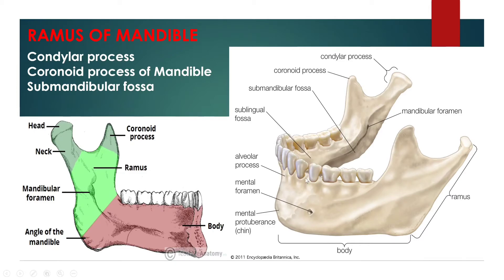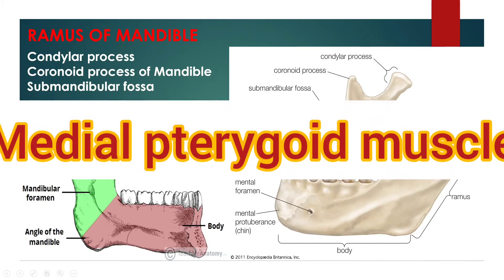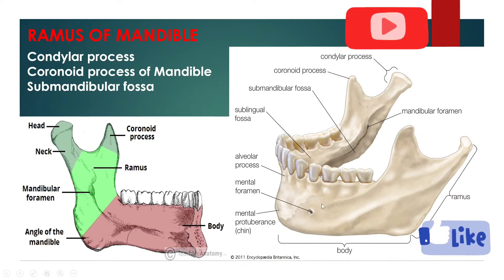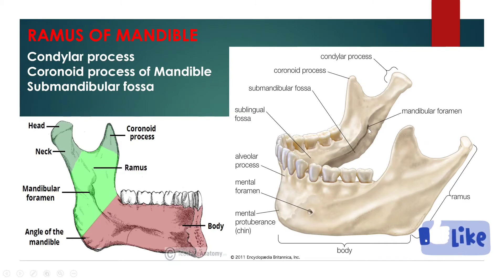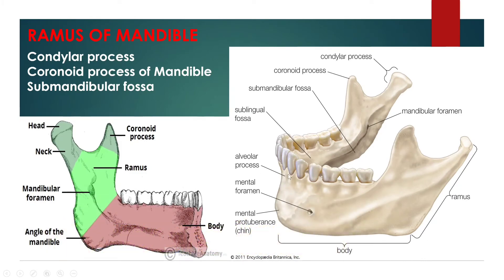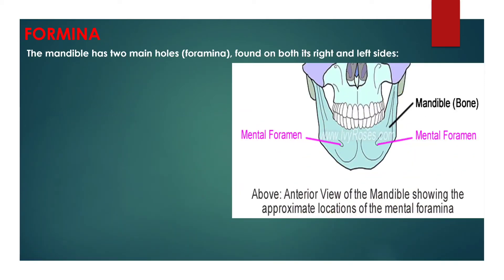Behind this groove is a rough surface for the insertion of the medial pterygoid muscle. The mandibular canal runs obliquely downward and forward in the ramus, and then horizontally forward in the body, where it is placed under the alveoli and communicates with them by small openings, arriving at the incisal teeth. It turns back to communicate with the mental foramen, giving off two small canals which run to the cavity containing the incisal teeth. In the posterior third of the bone, the canal is situated near the internal surface of the mandible, and in the anterior third near the external surface. It contains the inferior alveolar vessels and nerves, from which branches are distributed to the teeth.